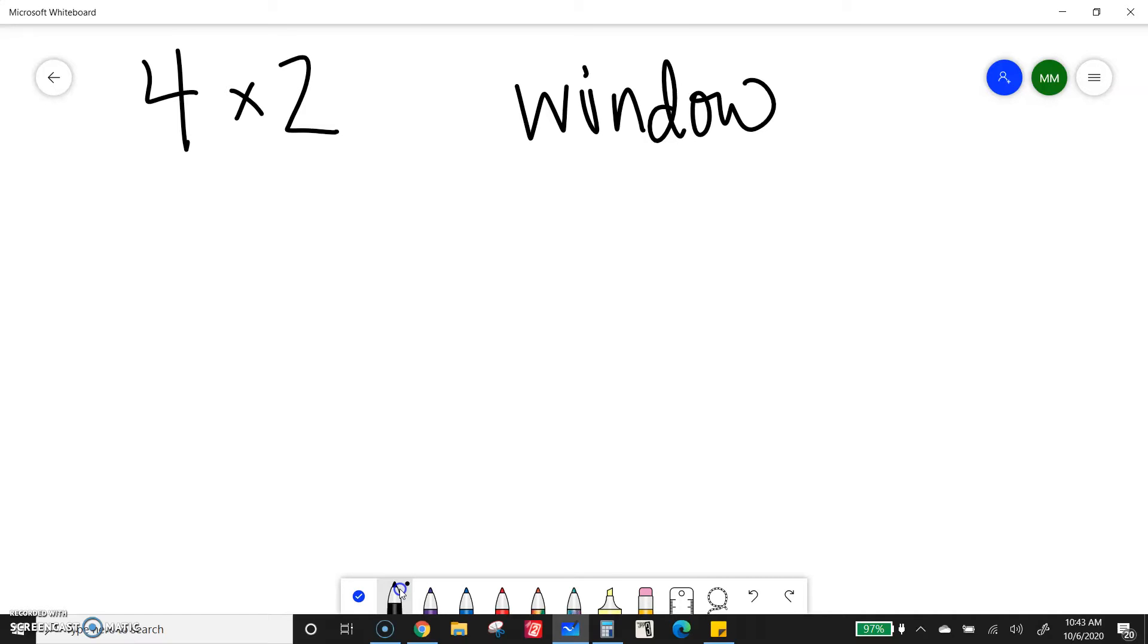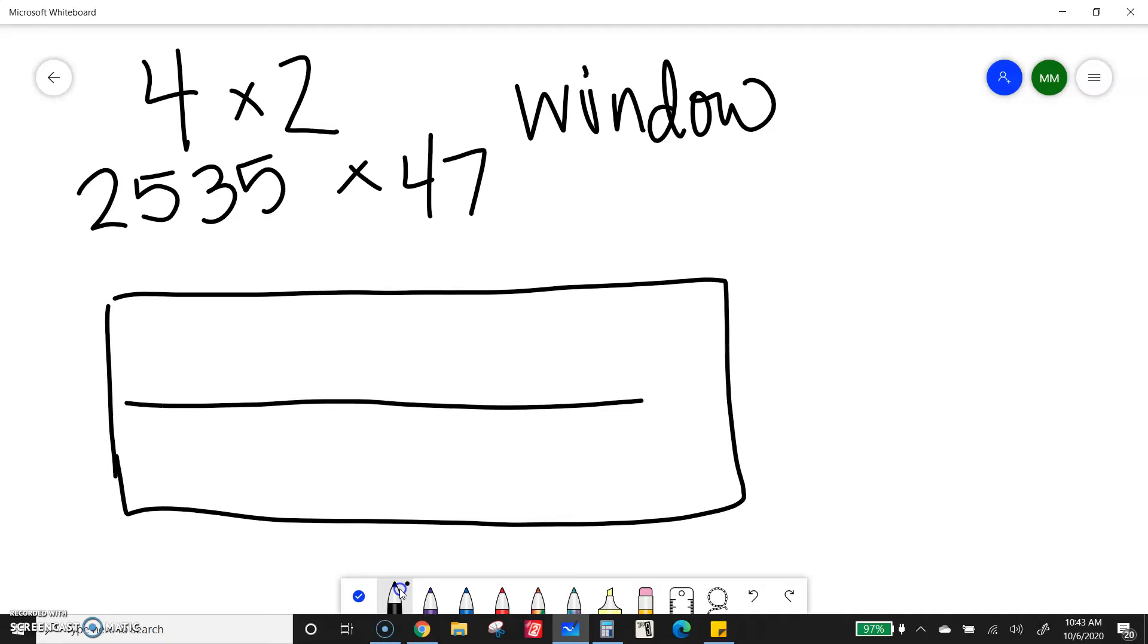So the problem we will practice with is 2,535 times 47. A lot of it is exactly the same. The main difference is just that I'm making a bigger box so that I have room for two digits that way and four digits that way, right?